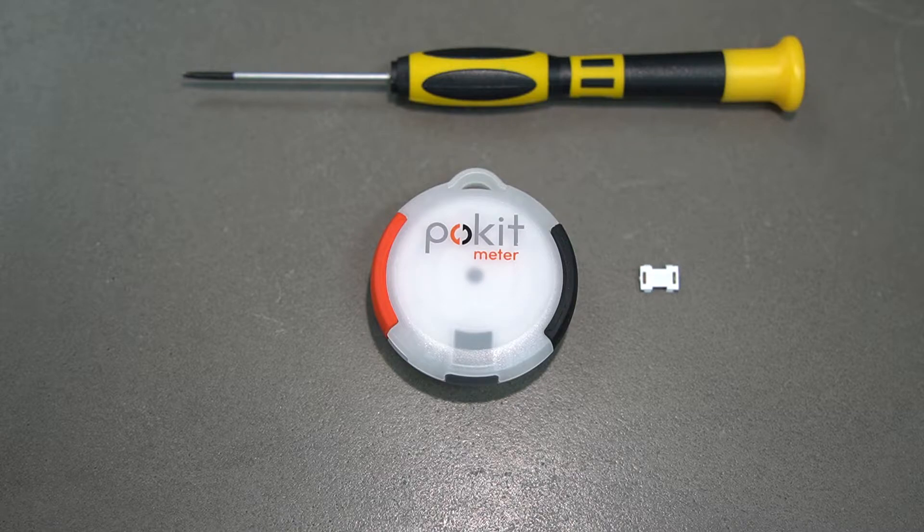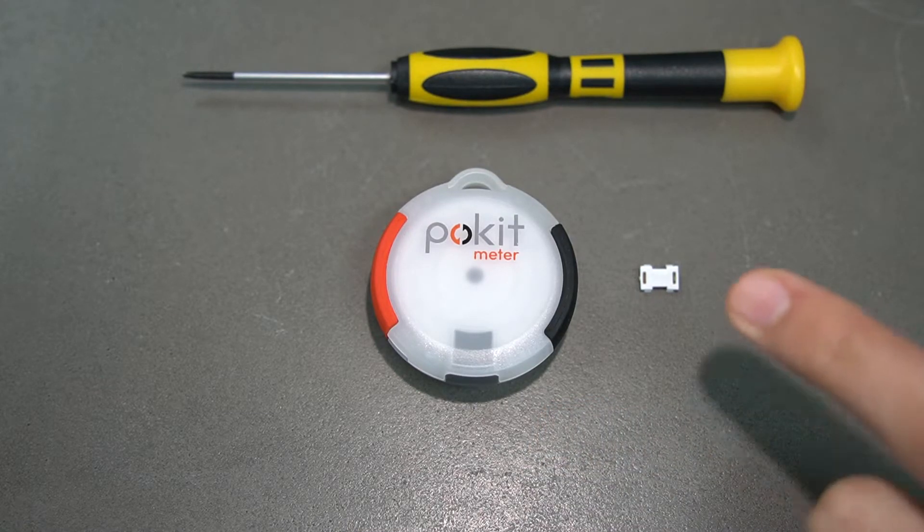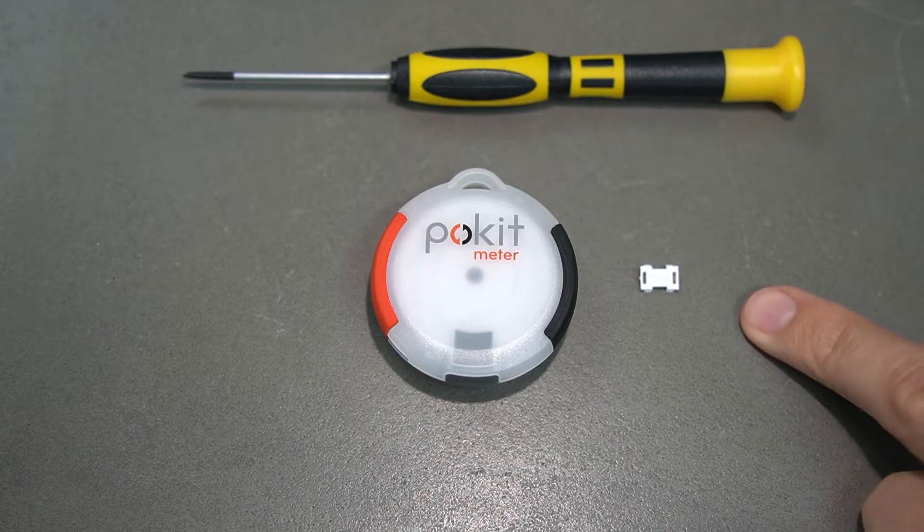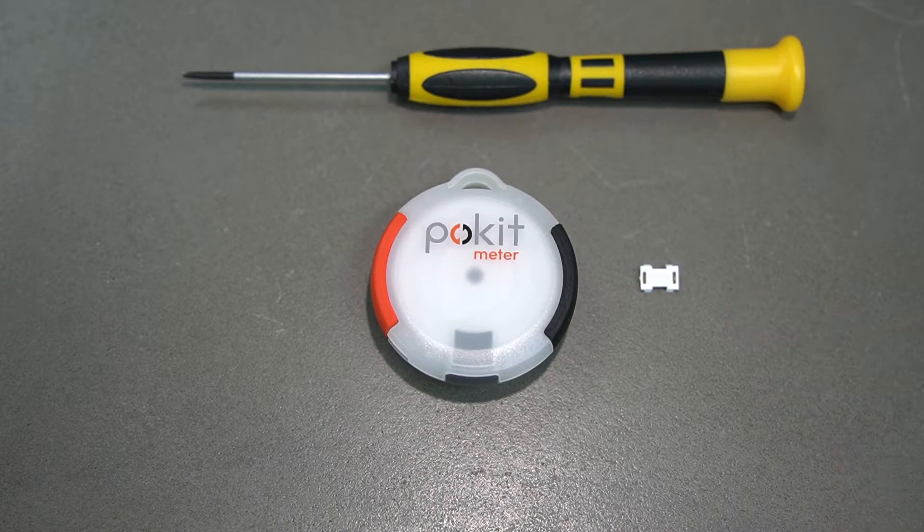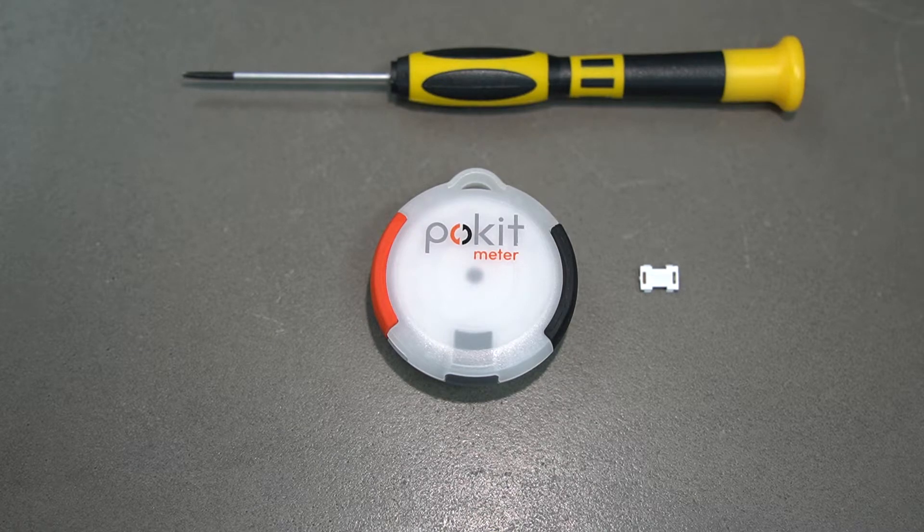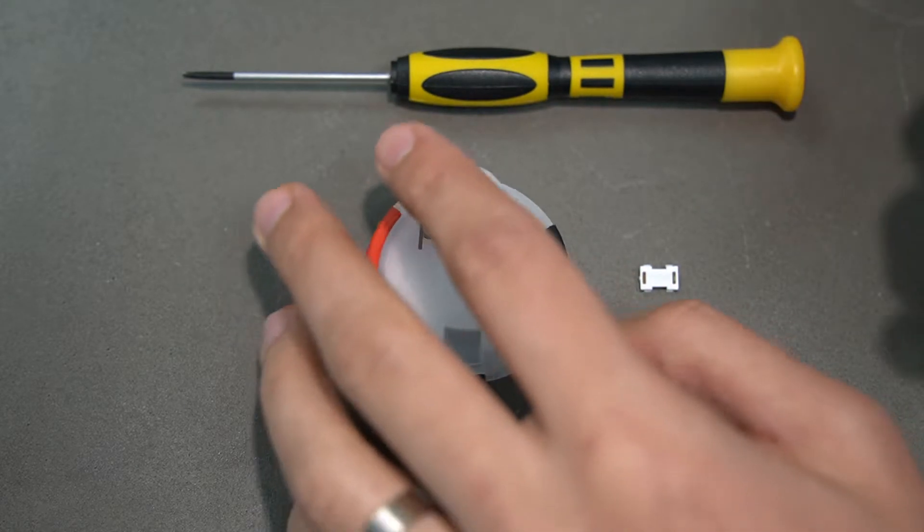In this user guide, we'll be taking a look at how to change pocket meter's fuse and battery. For this you'll need a pocket meter, a pocket meter fuse (one of these should have come with your pocket meter or you can get a set of five on the pocket shop), and a flathead screwdriver.